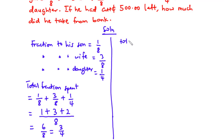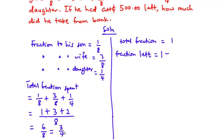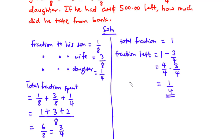The total fraction is equal to one. So if we want to find the fraction left, the fraction left will be equal to the total fraction minus the total fraction spent, which is three over four. Because the denominator is four, one over one is also equal to four over four. So we subtract three over four and we have one over four, since four minus three is one. The fraction left is one over four.